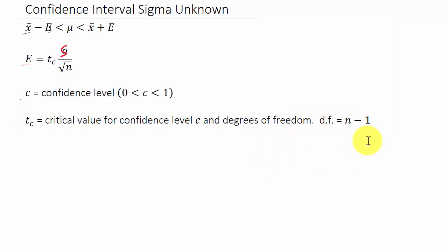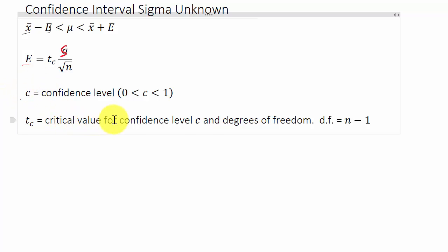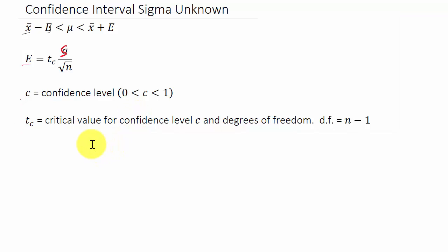Basically, if sigma is known, we use the normal distribution to find the critical value for the confidence level. But if sigma is unknown, we use the Student's t-distribution. Excel is going to calculate all that for us.